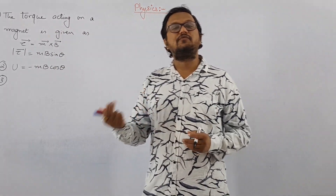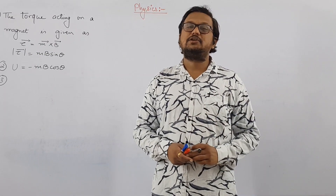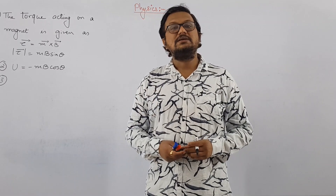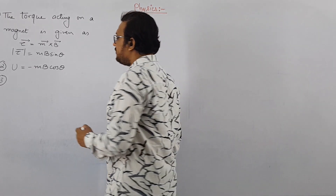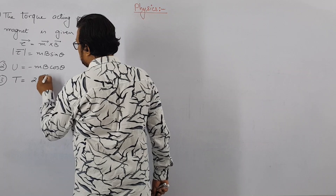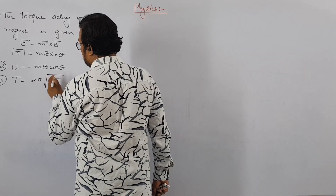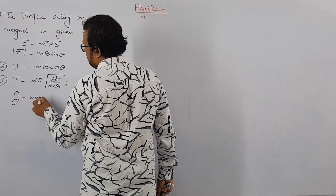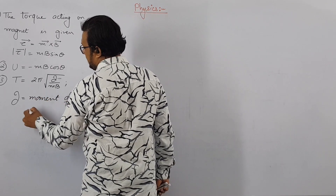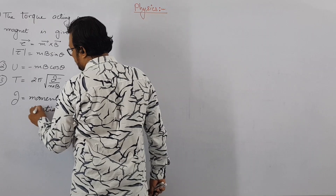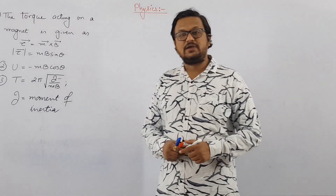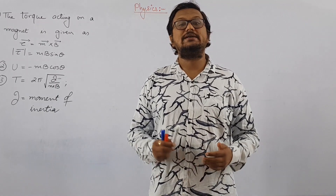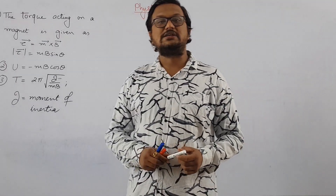If a bar magnet or solenoid is kept in a uniform magnetic field and displaced from its equilibrium position and released, it will start performing simple harmonic motion (SHM). The period of such oscillation is T equal to 2 pi under root of I by MB, where I is the moment of inertia. We use a different symbol for moment of inertia since capital I denotes current and small i denotes imaginary current in chapter 7.